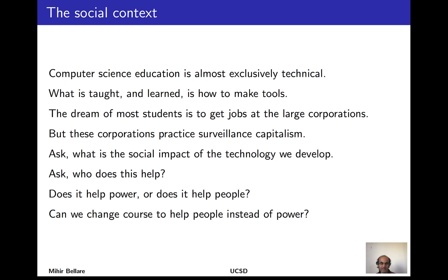The suggestion is to increase your awareness of what is done with the technology you study and develop. Computer science education is almost exclusively technical — you learn to make tools, write software, develop algorithms — and most students dream of getting a job at a large corporation. But what these corporations practice is surveillance capitalism, and working at them furthers that. Step back and ask: what is the social impact of the technologies we develop? Who does it actually help beyond making money for your employer? Does it help those already in power, or does it help people? Can we think about changing the course so that the technology we have is a way to actually help people?